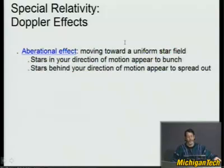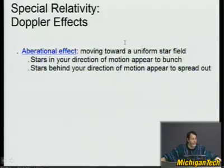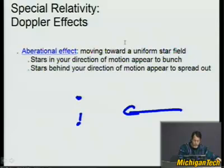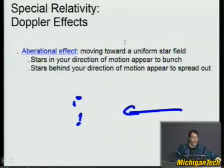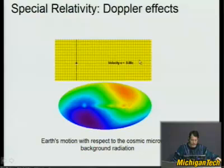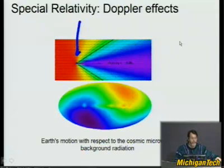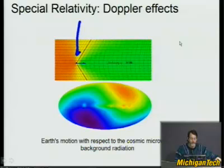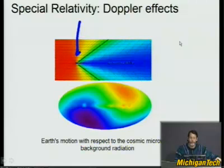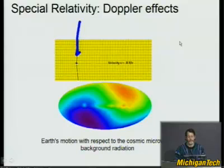There's also the aberrational effect. Let's say you're driving down the street and you see stars in front of you. If you drive fast enough, the road appears to narrow in front of you, and the stars that were in front of you appear to move together — they become closer together. The universe bunches in front of you when you move really, really fast. That is an aberrational effect, apart from all kinds of color effects. As you move very quickly, things in front of you turn more and more blue and more and more bunched together, while things behind you turn more and more red and more spread apart.